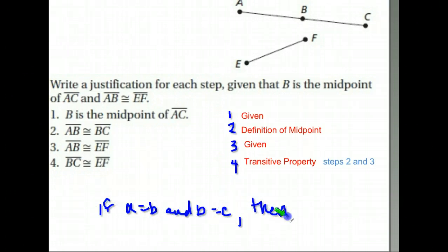Our transitive property looks like this: if a equals b and b equals c, then a equals c. It's easy to get transitive mixed up with substitution, but we're putting these two facts together, taking out that b, or in this case the AB that was the same in each of them, and putting them together. That's the transitive property, putting steps two and three together.